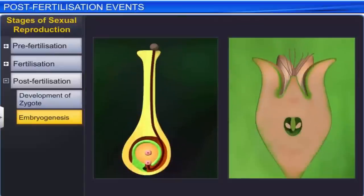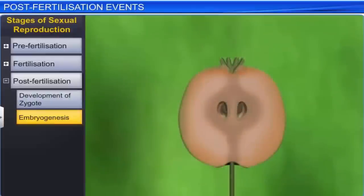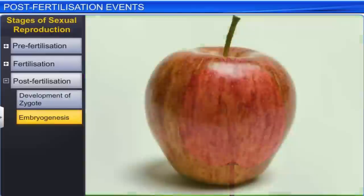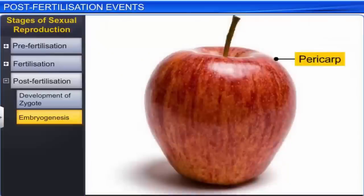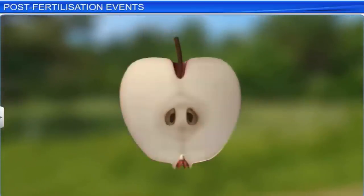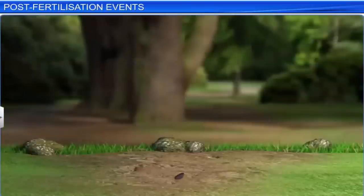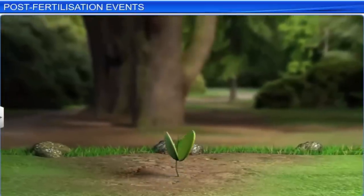During embryogenesis, the zygote develops into the embryo, whereas ovules develop into seeds. The ovary, on the other hand, develops into a fruit. The fruit is covered with pericarp, a thick wall that protects the seeds and the embryo. After the fruit is consumed, the seeds get dispersed by wind, water, or animals, and these seeds later germinate into a new plant.